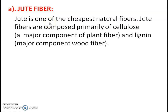The first bast fiber we will study is jute fiber. Jute is one of the cheapest natural fibers. Jute fibers are composed primarily of cellulose — a major component of plant fiber — and lignin, a major component of wood fiber. So we can say jute fiber is a combination of cellulose and lignin, making it partially a textile fiber and partially wood.